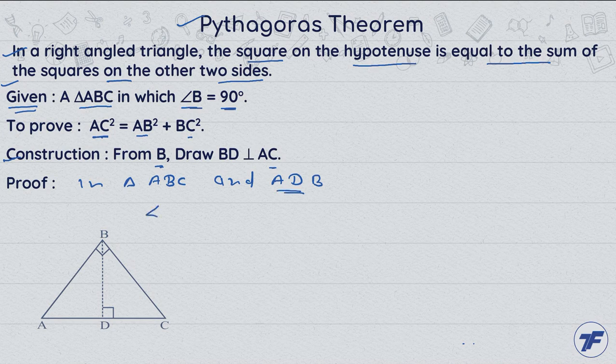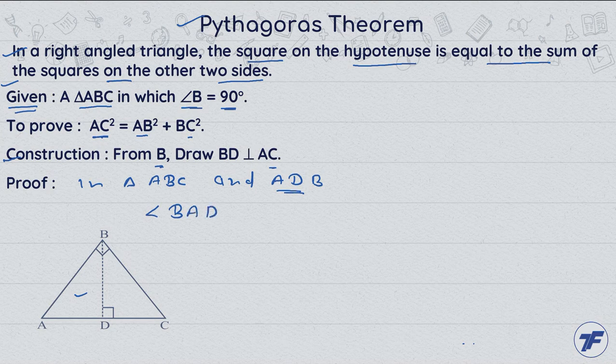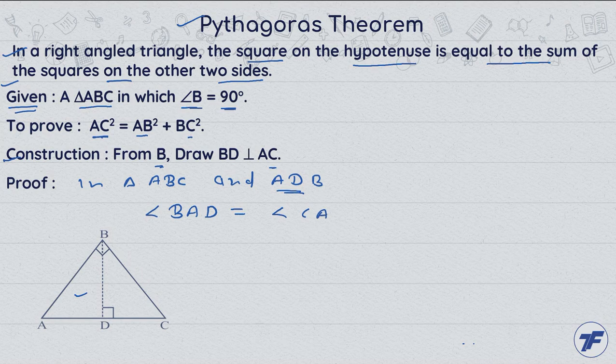First of all, ADB की बात करते हैं. ADB हमने जो portion choose किया है, उससे क्या होता है? Angle BAD equal to angle CAB. I hope you're clear. This is the common angle.